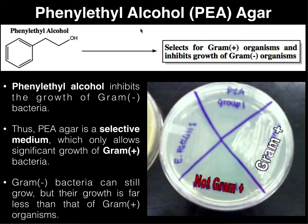PEA is an acronym where P stands for phenyl ethyl alcohol, which is a chemical embedded into this agar. Appearance-wise, this agar looks very similar to TSA, but it's not a simple growth medium — it's a selective medium, because it contains this chemical called phenyl ethyl alcohol.